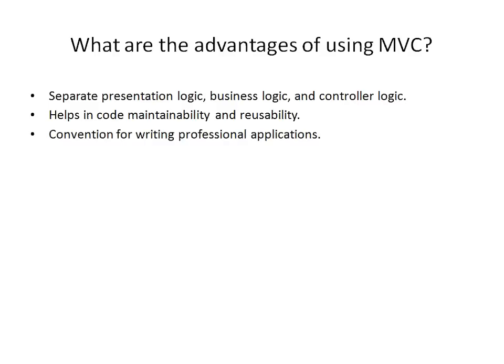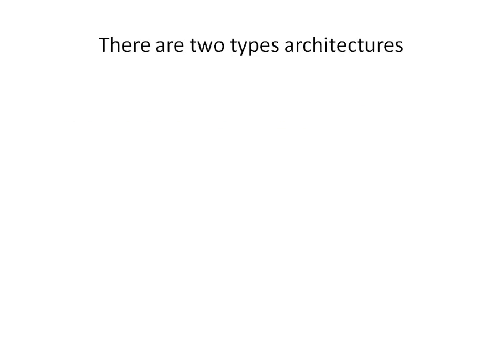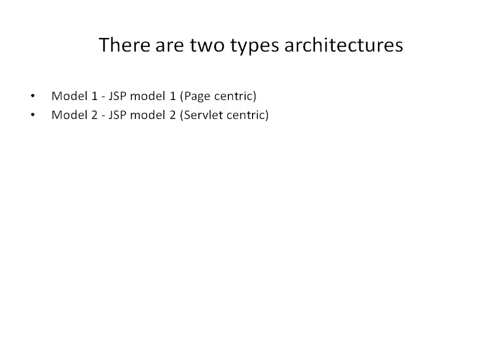There are a few advantages of using the MVC design pattern. It separates presentation logic, business logic and controller logic from each other. It also helps in code maintainability and code reusability. There are two types of MVC architecture models: Model 1, also known as JSP Model 1 or Page-Centric Approach, and Model 2, also known as JSP Model 2 or Servlet-Centric Approach.